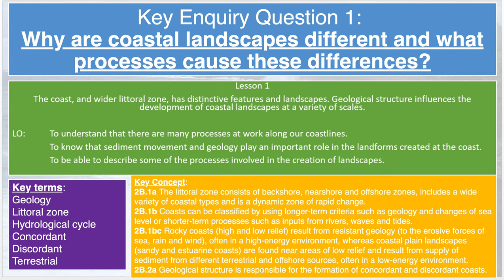In our coasts unit of work, in today's lesson you should be able to define what the coast is, what the littoral zone is, and what the various parts of the littoral zone are. You should also be able to list inputs, outputs, and processes at the coast. Make sure you pause and write down the key terms in the purple box: geology, littoral zone, hydrological cycle, concordant, discordant, terrestrial. If you can't define those terms by the end of this lesson, you need to do some research.